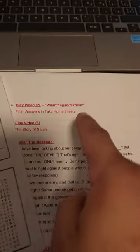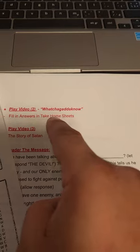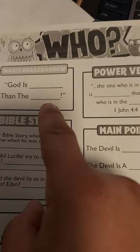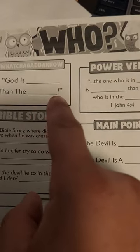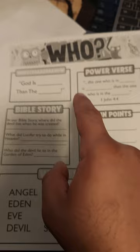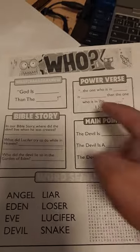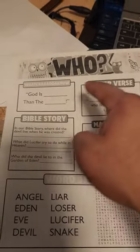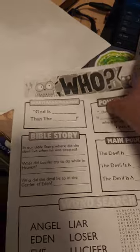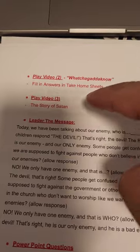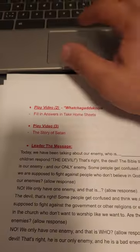Then go back to the take-home sheet. This sheet is active throughout the whole lesson, so the kids can fill in the 'What You Gotta Know' section right here. Once that's done and the sheet is filled in, play Video Three.